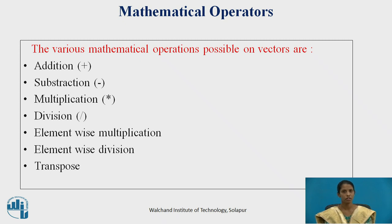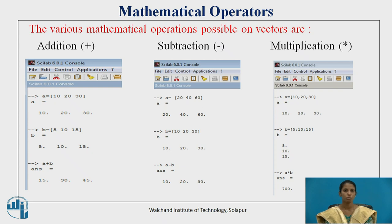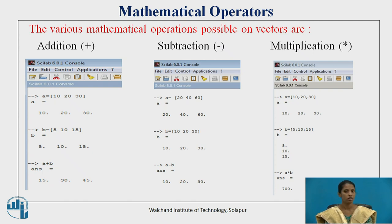The various mathematical operations possible on vectors are addition, subtraction, multiplication, division, element-wise multiplication, element-wise division, and transpose. Before going to the operations on vectors, let's see how vectors are represented in Scilab. Vectors are represented by square brackets; a sequence of numbers separated by commas or spaces are represented as vectors.